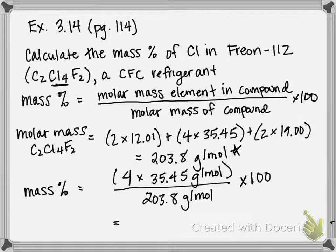So four times 35.45 is technically 141.8 grams per mole divided by 203.8 times 100, gives us a mass percent of chlorine of 69.58 percent.